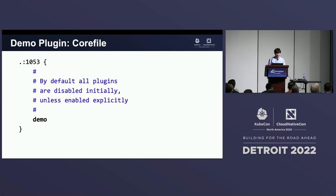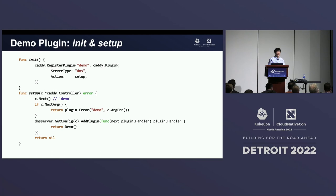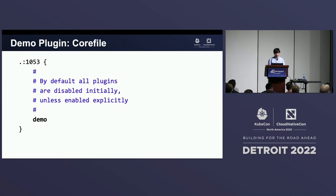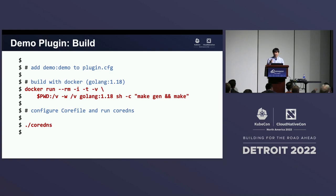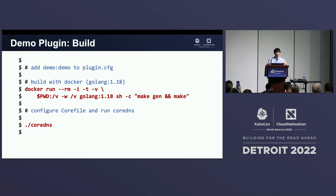You can continue to construct a Corefile as mentioned in the previous setup section. We don't take any arguments — we only accept the plugin name 'demo'. The Corefile will simply say 'demo', which invokes the plugin. The plugin has to be compiled as part of the CoreDNS repo. So you clone the CoreDNS repo, add 'demo' to plugin.cfg, and there's an easy way to build everything — you run the docker build command shown here. After running that command, the CoreDNS binary will be available in your local directory, and you just invoke CoreDNS. The whole repo consists of only about 80 lines of Golang.